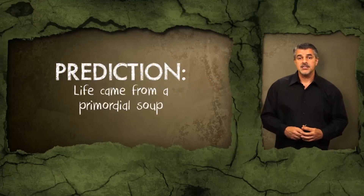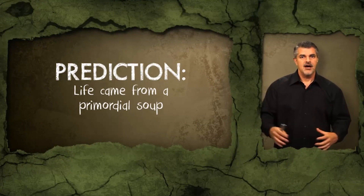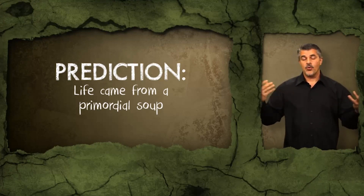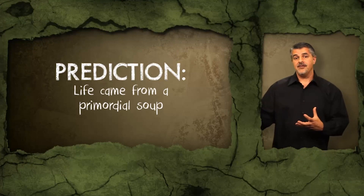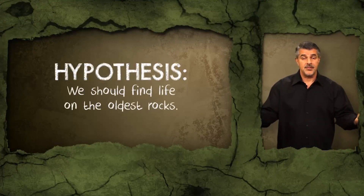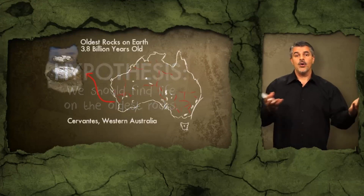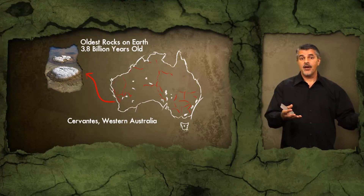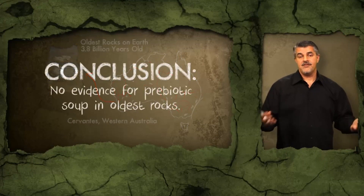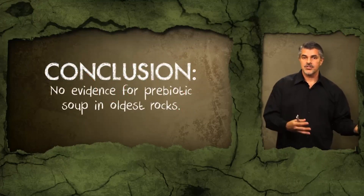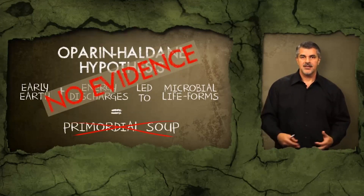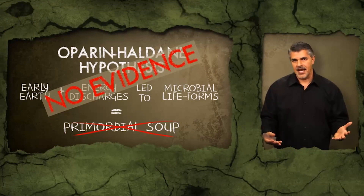A critical component of chemical evolution is that life comes out of a primordial soup. If this soup existed on the early Earth, we should be able to find its chemical signature in the oldest rock formations on Earth, which date to 3.8 billion years. The fact is we see no evidence in these oldest rock formations for a prebiotic soup whatsoever. The primordial soup is essentially a scientific myth — it is not an established scientific fact.